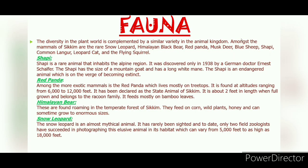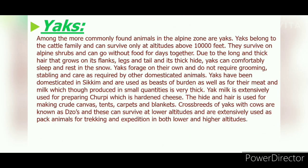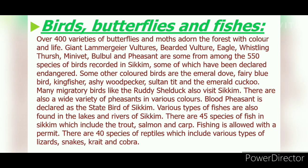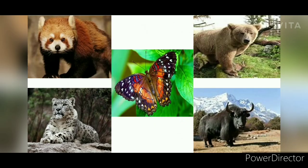Next is fauna, which consists of mammals such as snow leopards, Himalayan black bears, red panda, musk deer, blue sheep, and more. The next two slides are also given for a brief description — you may pause the video to read them. This is another collage of mammals present in Sikkim at very high altitudes.